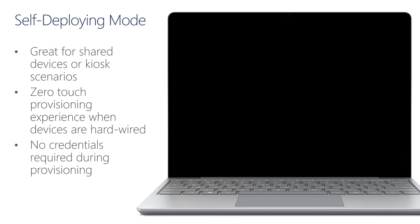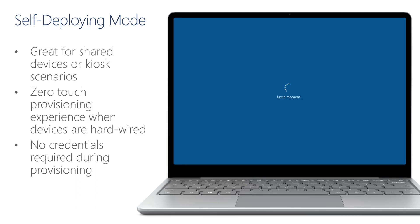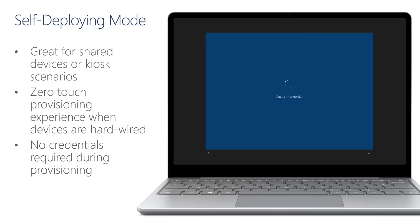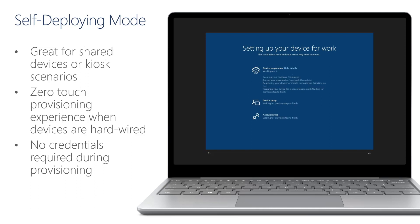Now let's take a look at the enrollment in practice. The device is starting up, and because the device is hardwired, you no longer need to configure the region or the keyboard, and the device automatically loads the Autopilot self-deploying mode profile. Once the Autopilot profile has been loaded, we now expect to move on to the enrollment status page of the process. In the device preparation, the device will get MDM enrolled through hardware attestation.